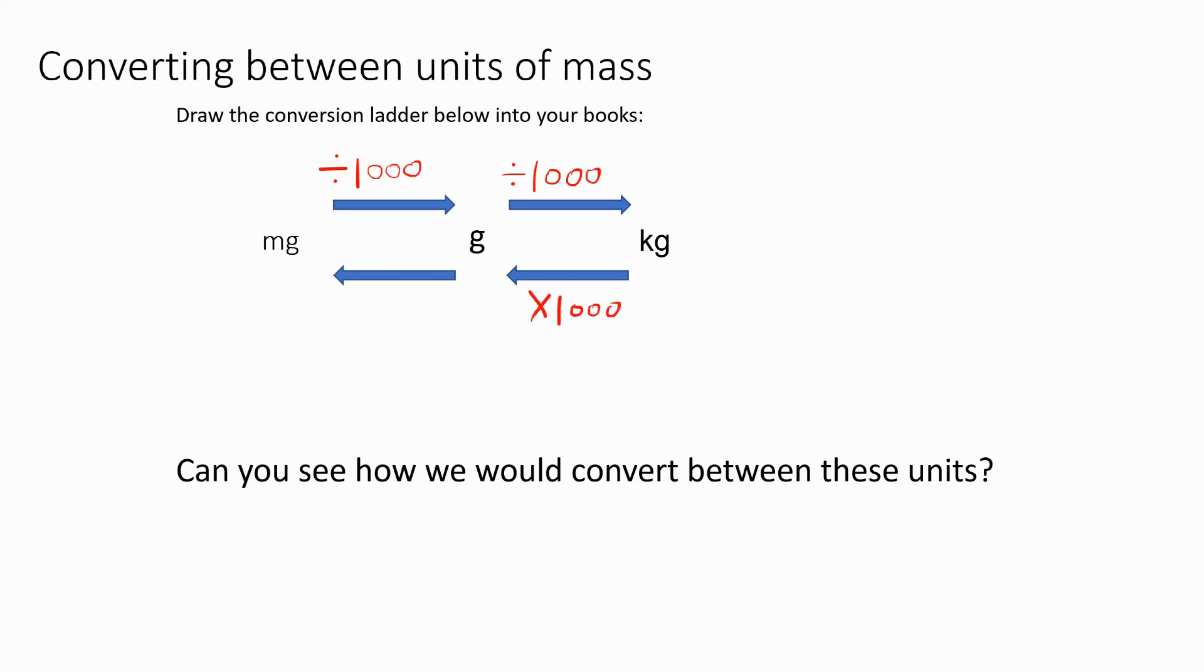So this is the conversion ladder that we would use for milligrams, grams, and kilograms. But also remember we have tons. We also have tons, which is the same, it's also a thousand. So converting between masses really is the easiest one to do. It's always a thousand as a factor between each of them.